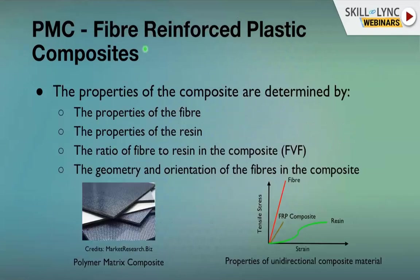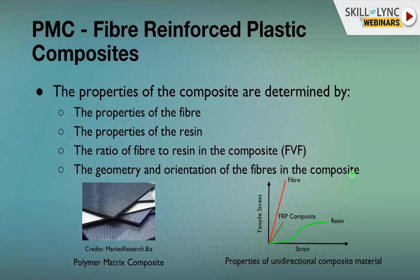The properties of PMCs are determined by four factors: the properties of the fiber, the properties of the resin, the ratio of fiber to resin — called the fiber volume fraction — and the geometry and orientation of the fibers. Fiber orientation, whether unidirectional, quasi-isotropic, bidirectional, or haphazard, determines the end properties.